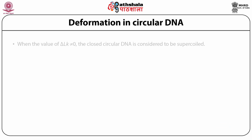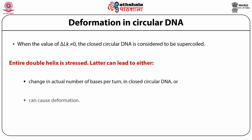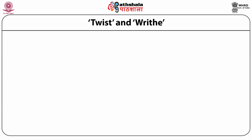Deformation in circular DNA: when the value of delta LK is not equal to zero, the closed circular DNA is considered to be supercoiled. The entire double helix is stressed. This can lead to either a change in the actual number of bases per turn in the closed circular DNA, or can cause deformation. Supercoiling can be structurally realized in two ways: by deforming the molecular axis, and by altering the twist of the double helix.